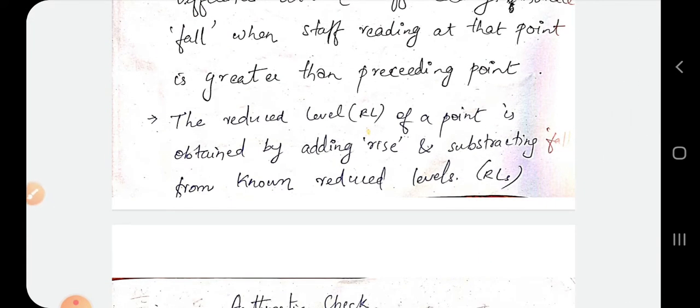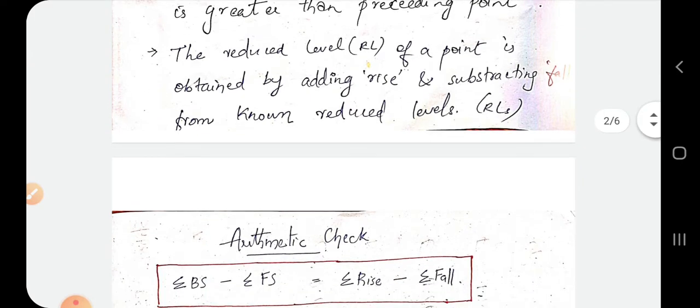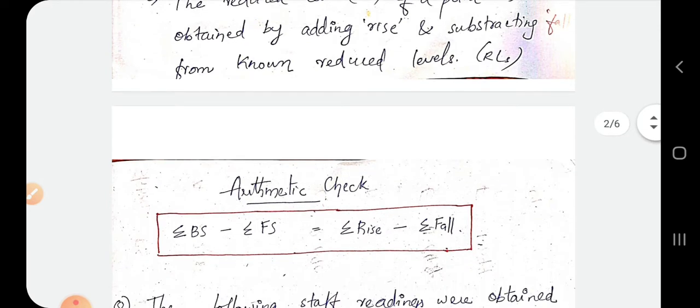If the reading at the new point is smaller, it is a fall. The reduced level of a point is obtained by adding rise and subtracting fall from the previous reduced level. The problem is clear.